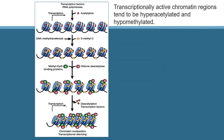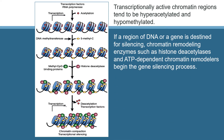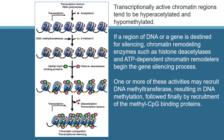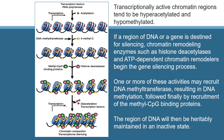Transcriptionally active chromatin regions tend to be hyperacetylated and hypomethylated. If a region of DNA or a gene is destined for silencing, chromatin remodeling enzymes such as histone deacetylases and ATP-dependent chromatin remodelers begin the gene silencing process. One or more of these activities may recruit DNA methyltransferase, resulting in DNA methylation, followed finally by recruitment of methyl-CpG binding proteins. The region of DNA will then be heritably maintained in an inactive state.